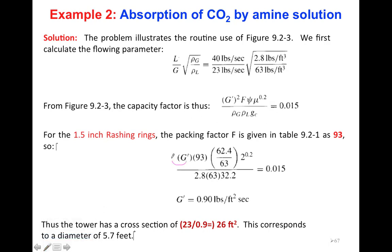I have my packing factor 93. I plug all the information here and then I can find my G'. You have all the information. You will find G' which will be 0.9 pounds per square foot second. Now you have G', and also you have G which is 23. This is your G.